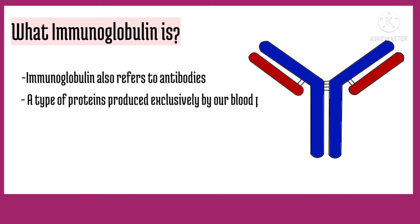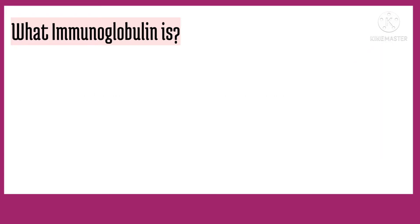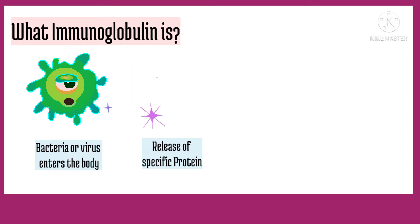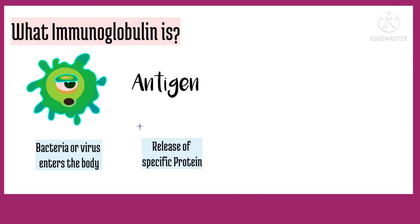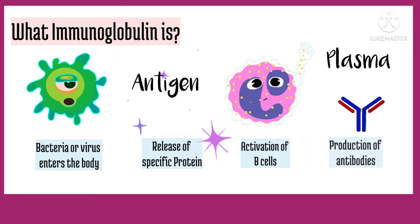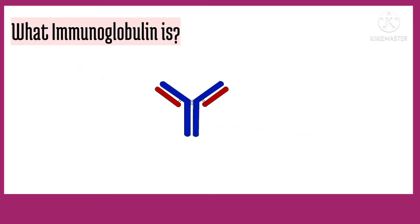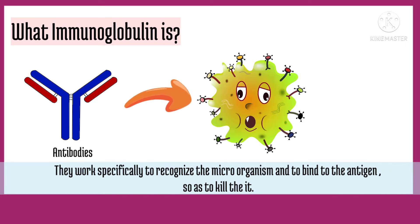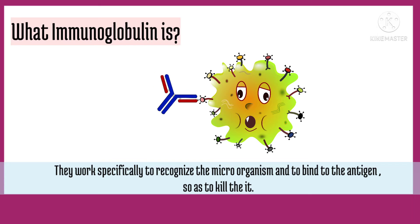These are a type of proteins produced exclusively by our blood plasma cells. When a bacteria or virus enters our body, it releases a specific toxin or protein, also called the antigen. This antigen activates a type of WBC called B cells, which then instructs the plasma cells to produce the antigen-specific antibody.